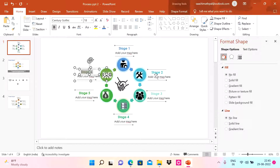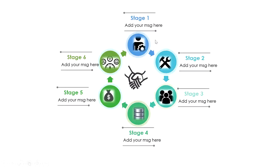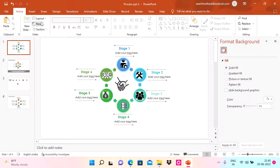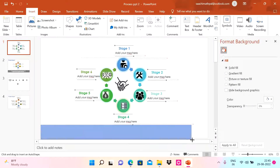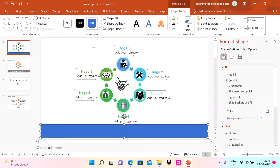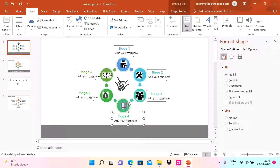Now that the stage labels match their circle colors, the next step is to conclude the slide. It's always advisable to add a summary message at the bottom. I'll add a rectangle at the bottom, set no outline, choose a background color, and position it there.